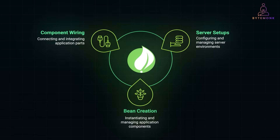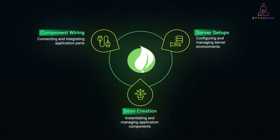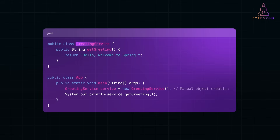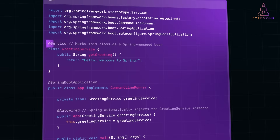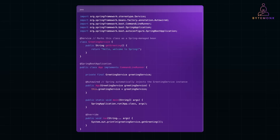One of the coolest things about Spring is how it takes care of all the heavy lifting behind the scenes — think server setups, bean creation and wiring your components together — so you can focus on building features that matter. For example, suppose you have a GreetingService class that returns a friendly message. In plain Java you'd usually create a new GreetingService each time you need it, and that can get messy as your project grows. But with Spring, you mark your class with an annotation like @Service and let the framework automatically create and manage it for you. Then anywhere you want to use that greeting, Spring simply injects it so you don't have to keep writing 'new' all over the place.